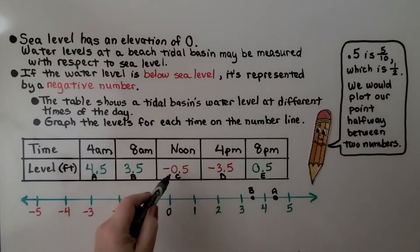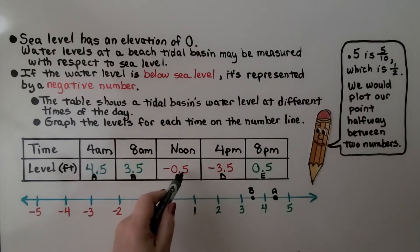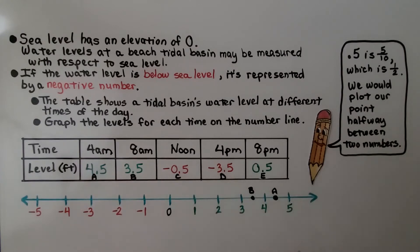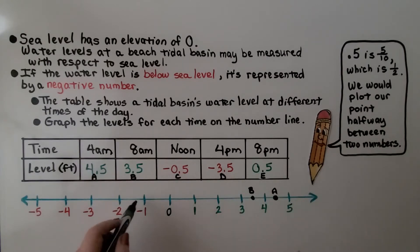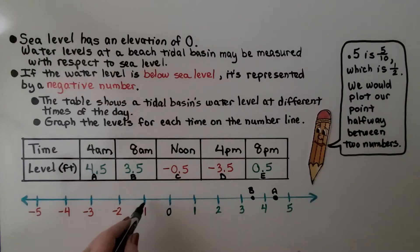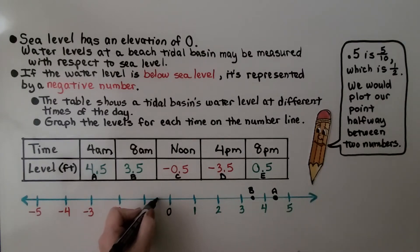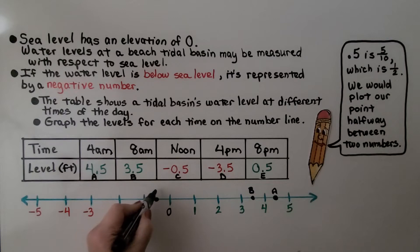At noon, it says it's negative 5 tenths — negative half. So it's not negative 1; it's in between 0 and negative 1. It would be right here, and we can label that C.